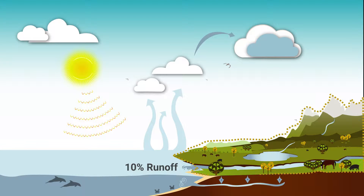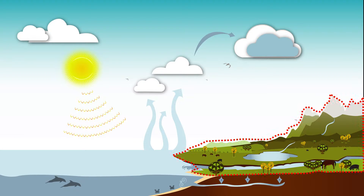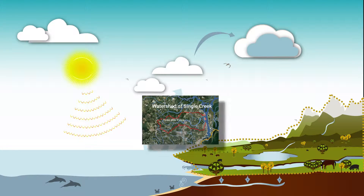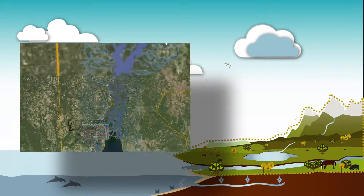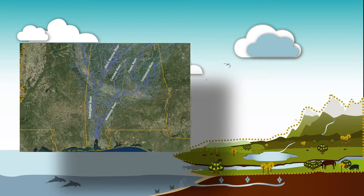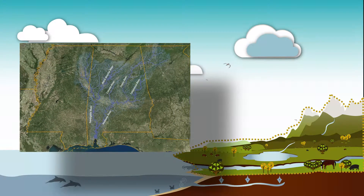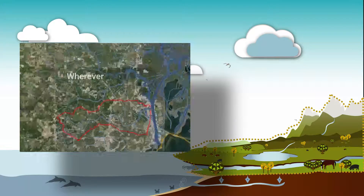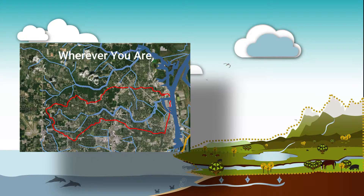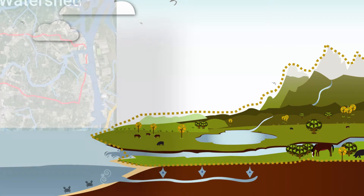A watershed is an area of land that drains into the same body of water. It can be a small area, like land surrounding a single creek, or it can include an entire river system that crosses state lines. It's important to remember that wherever you are, you are in a watershed, and however that land is used within the watershed will affect the water quality downstream.